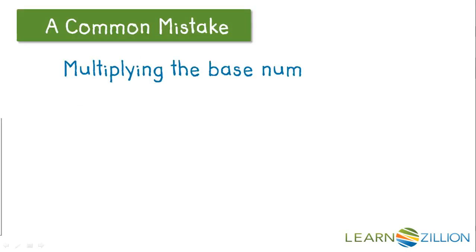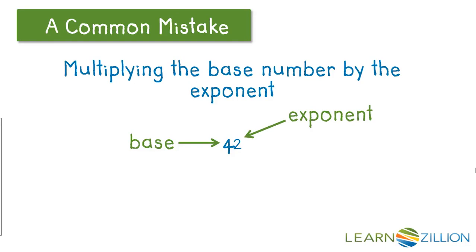A common mistake when using exponents is to multiply the base number by the exponent. You never want to multiply the base number of 4 times the exponent of 2 in the expression 4 to the second power. 4 to the second power is not equivalent to 4 times 2.